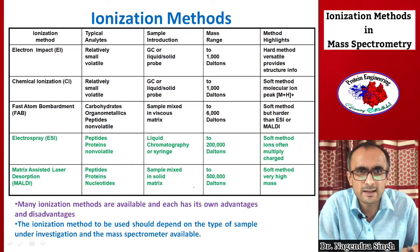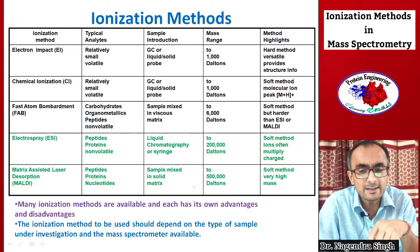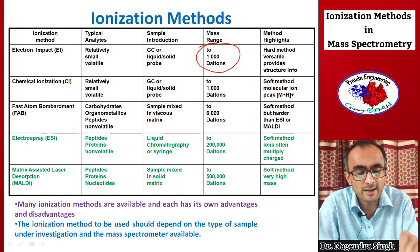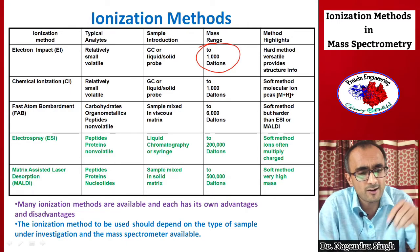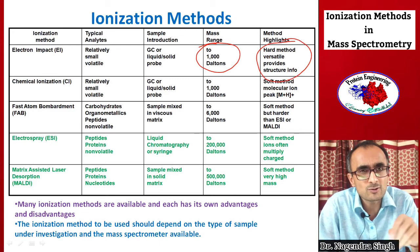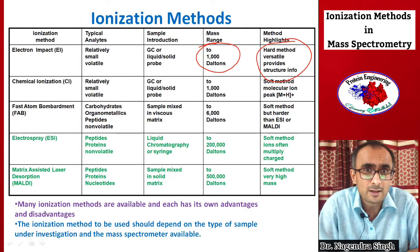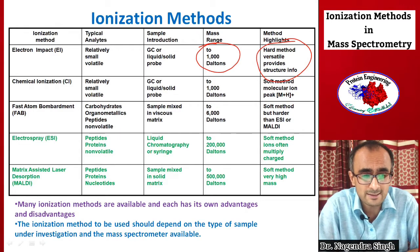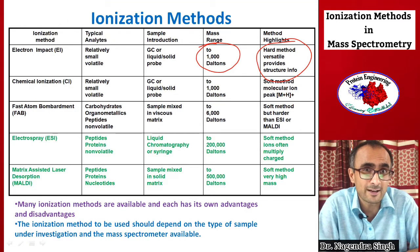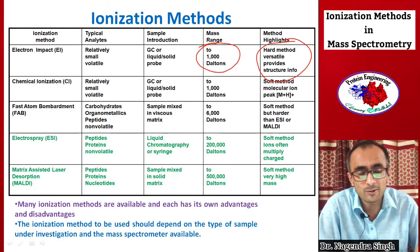Every method has its own advantages and disadvantages. Electron impact ionization is used for small volatile compounds, and its limitation is that only up to one kilodalton mass can be detected. It is a hard method — it breaks bonds — so the molecular ion peak is fragmented into different daughter ions, and that fragmentation information is utilized to derive the structure of the chemical compound.